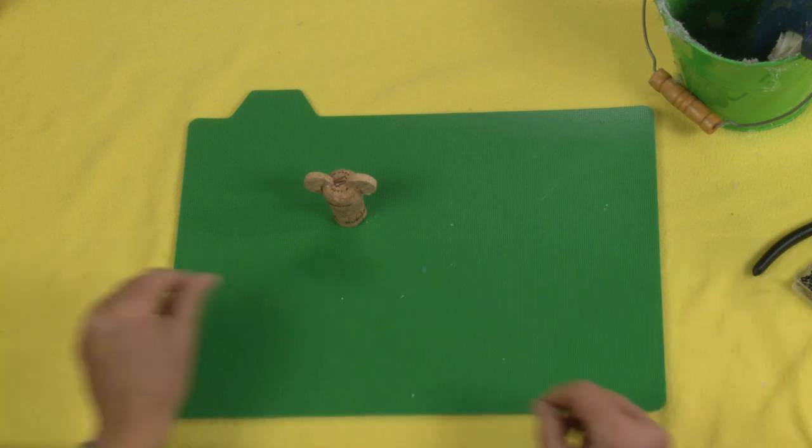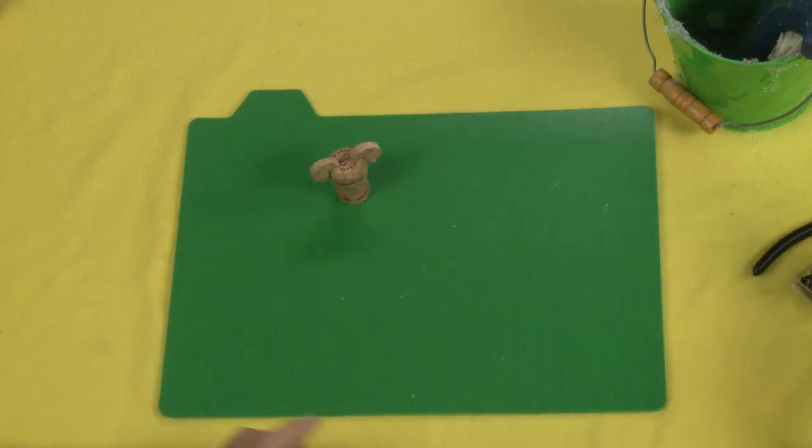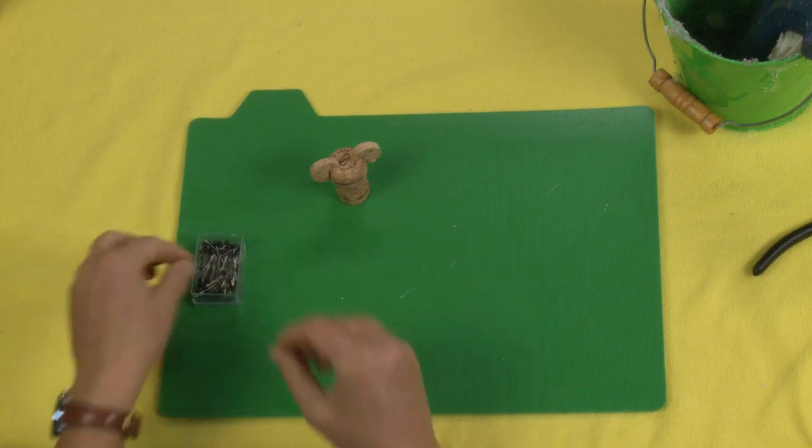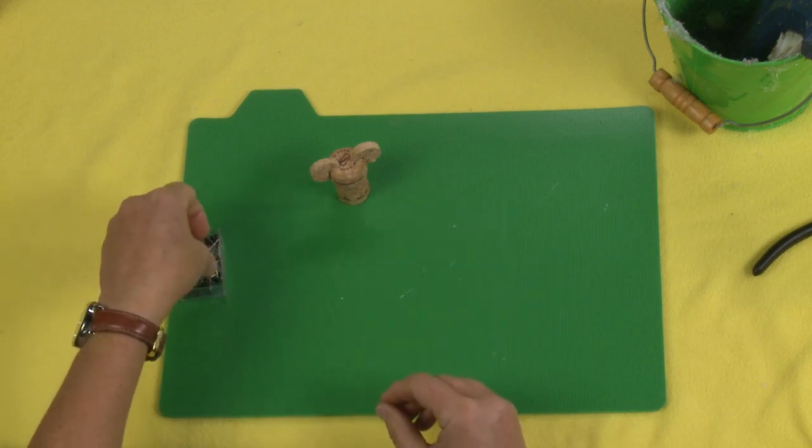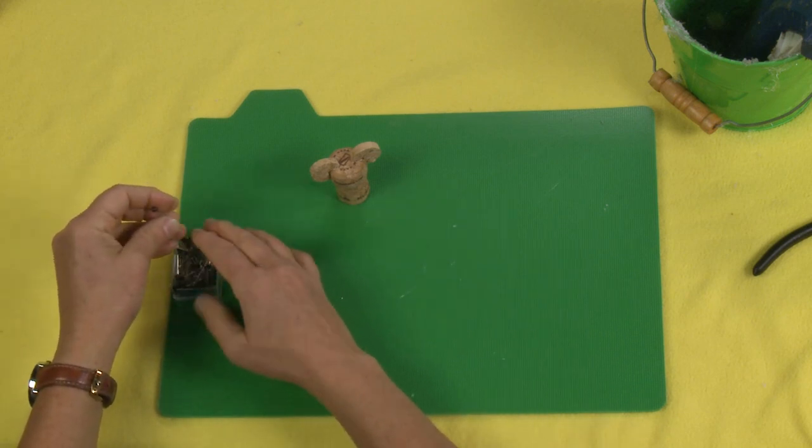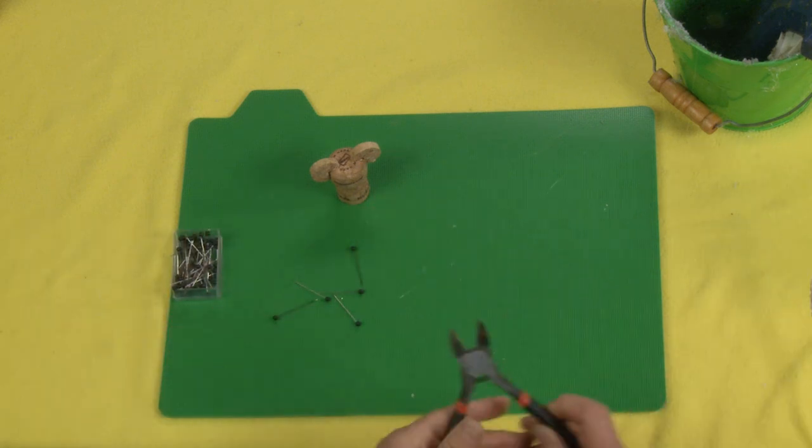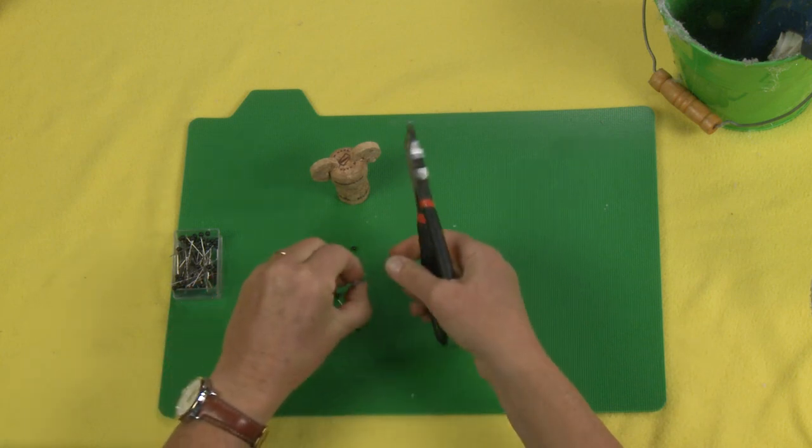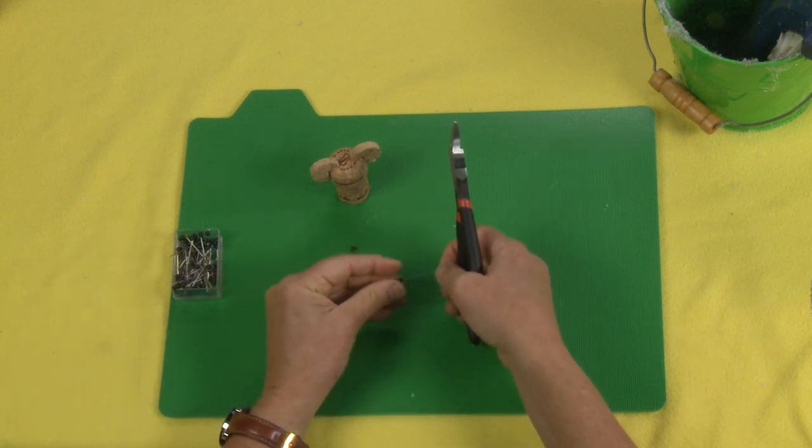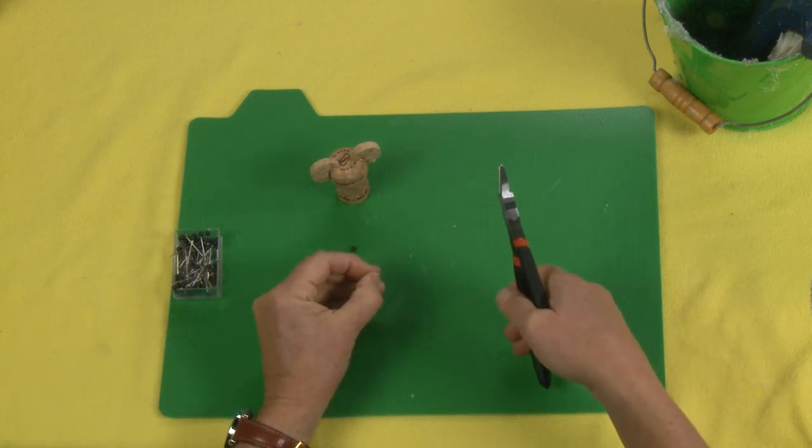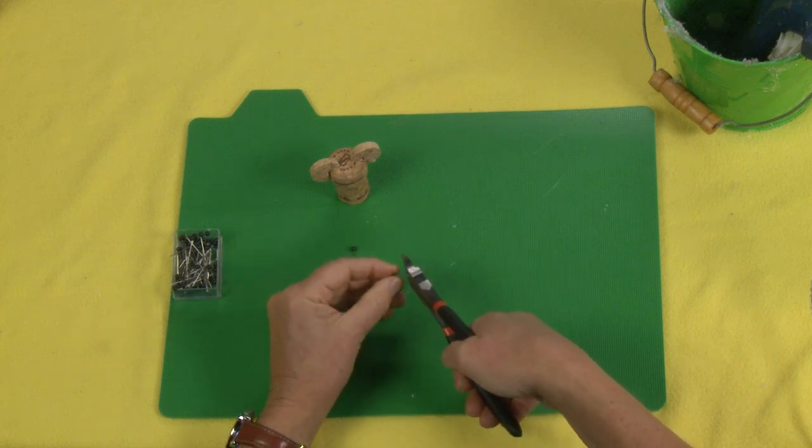The next step is to add the arms, the legs, and the face. And to do this, we're going to be using ball pins. I think in the beginning I said seven. You actually are going to end up, I believe, needing eight. We'll count together.